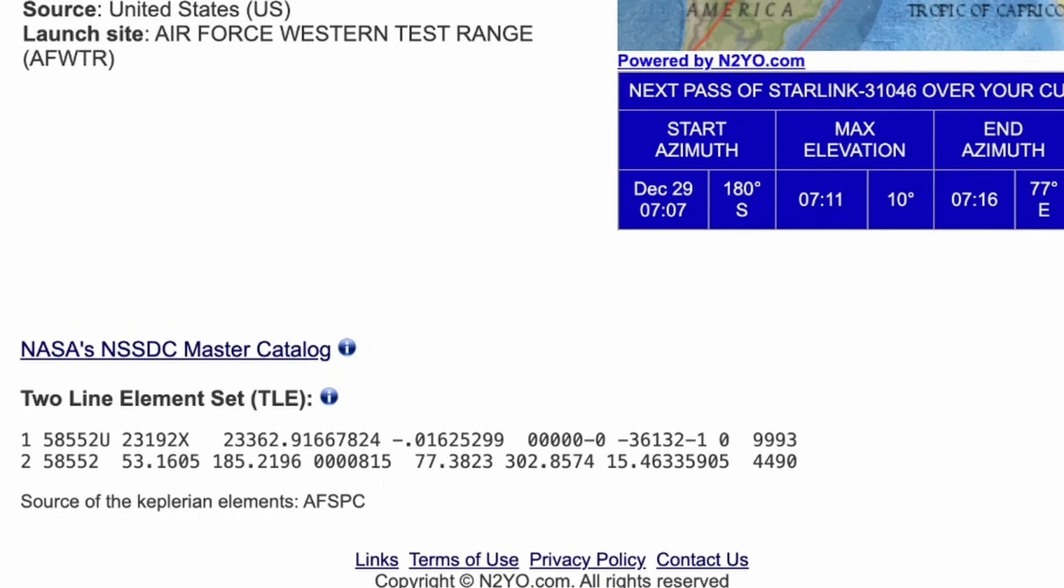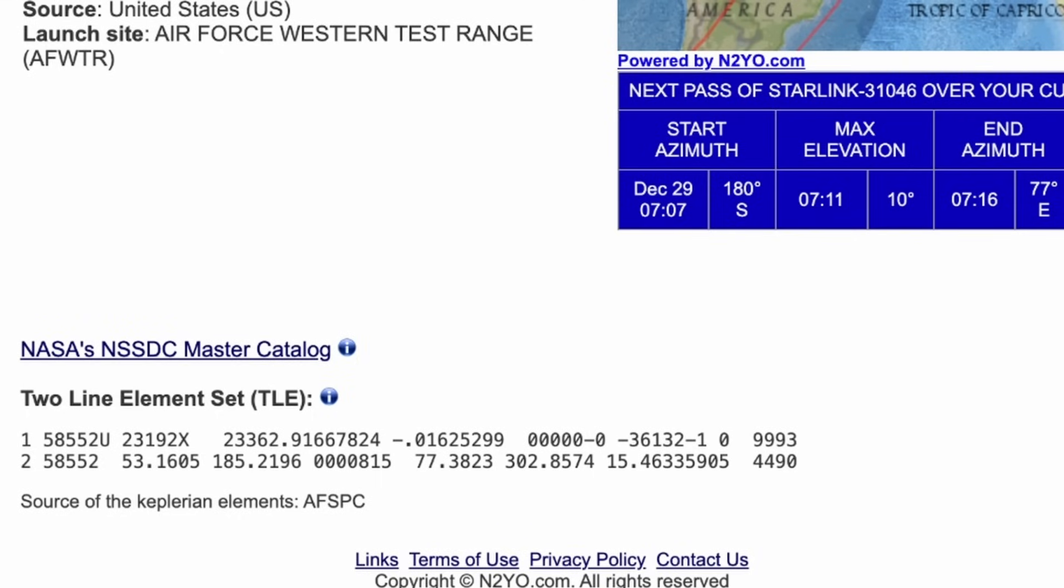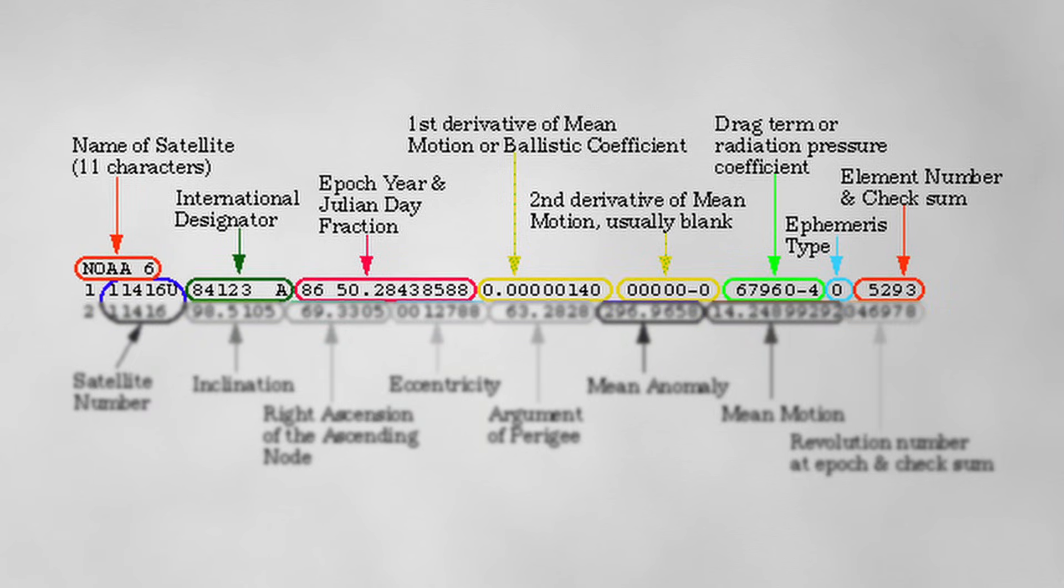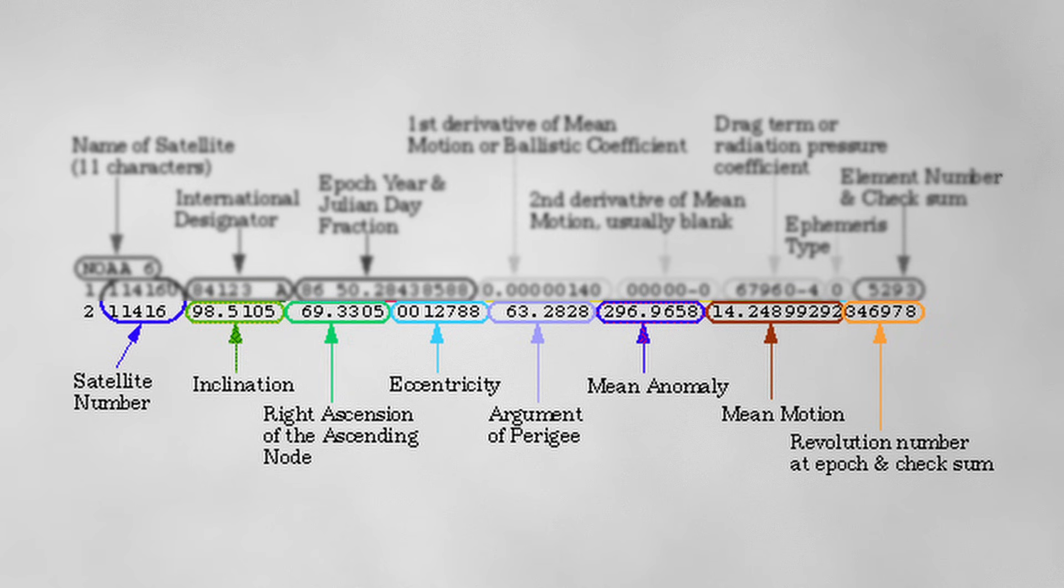Down here, I get something called a two-line element set, which is a descriptor of the satellite. A two-line element set, also known as a TLE, is a standardized format used to describe the orbits of satellites. The format is split into two lines. The first line includes the satellite number and the international designator, the epoch year, and descriptors of the satellite's motion and orbit. The second line also includes the international designator, alongside the satellite's Keplerian elements.